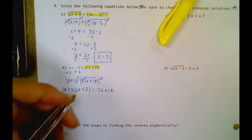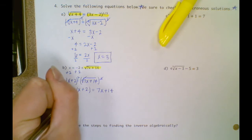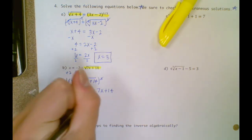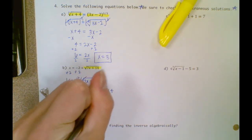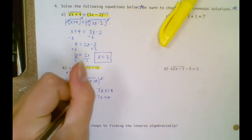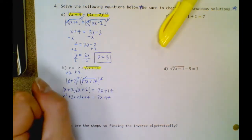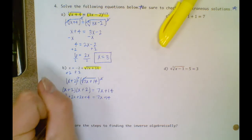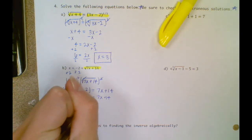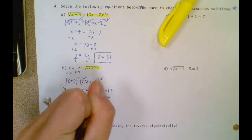Now that I have the radical by itself, this is a square root, so I'm going to square both sides. Remember, when you square this, that means x plus 2 times x plus 2 equals 7x plus 14 because that squaring cancels out the radical. So I get x squared plus 4x plus 4 equals 7x plus 14.